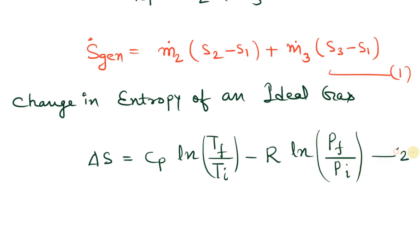Let this be equation number 2. Here R is the gas constant and Cp is the specific heat capacity at constant pressure. If we substitute equation 2 into equation 1, we can write the generated entropy.